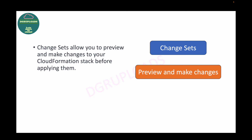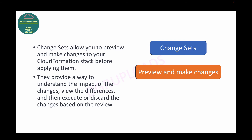For example, say you've created an EC2 instance with security group one attached, and now you want to change it to security group two. Instead of directly making those changes, you can use change sets to preview — it gives you a preview of the proposed changes, and only when you confirm you're okay does it start executing. Change sets let you understand the impact, view the differences, and then execute or discard the changes based on your review.